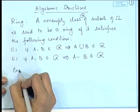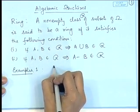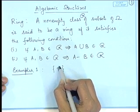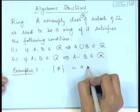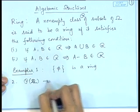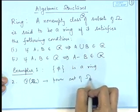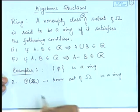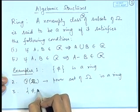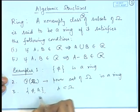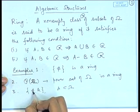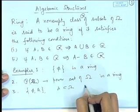Let us consider some simple examples to illustrate what is a ring. If I consider a class consisting of simply the null set phi, then this is a ring because phi union phi is phi, and phi minus phi is also phi. If I consider the power set of omega, then this is also a ring. If I consider the class {phi, A} where A is a subset of omega, this is also a ring because phi union A equals A, A minus phi equals A, and phi minus A equals phi.